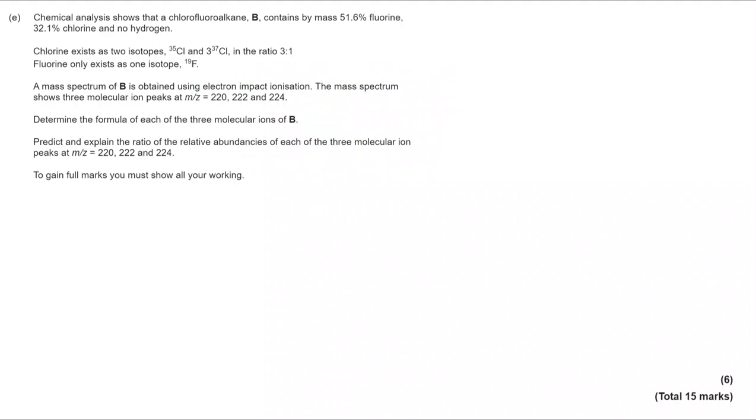A mass spectrum of B is obtained using electron impact ionisation. The mass spectrum shows three molecular ion peaks at m/z 220, 222 and 224. Determine the formula of each of the three molecular ions at B. Predict and explain the ratio of the relative abundances of each of the three molecular ion peaks at m/z 220, 222 and 224 and you must show your working.